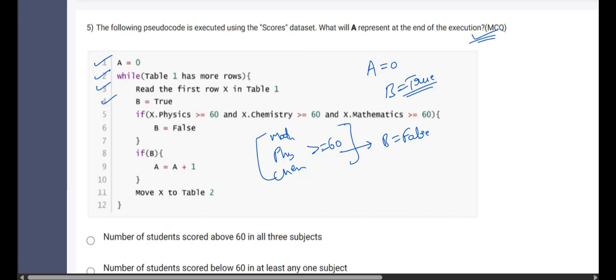See, in the eighth line, they have given us that if B, so here you might be confused what value should we take. Here we should only consider those statements which are assumed or having a value to be true. So here we are incrementing the value of A is equal to A plus one only when B is equal to true. And when does B remain to be true? B remains to be true if the students score less than 60 in all the three subjects.